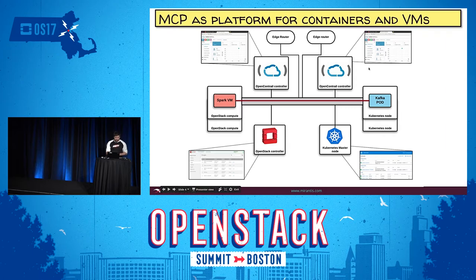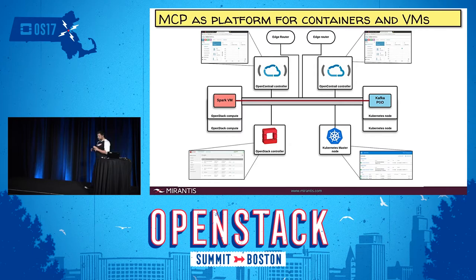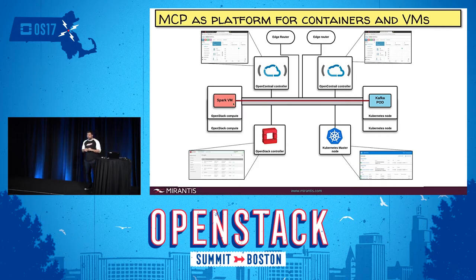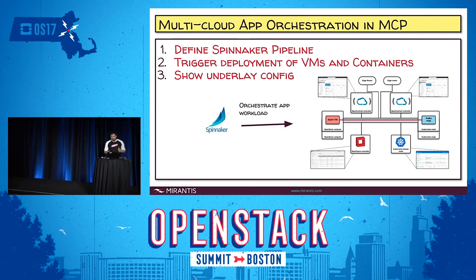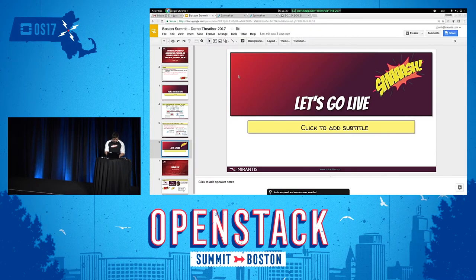Let me walk through the demo architecture. I have a Kubernetes cluster with Contrail CNI plugin, and an OpenStack cluster with Open Contrail as a backend. I'll pick a big data use case — similar to what was shown at the keynote this morning. In the container I'll have Kafka, and on the VM I'll simulate running Spark, plugging them through a single network with a single backend. I'll do all of this through Spinnaker, trigger the pipeline, and show notifications and all parts running.